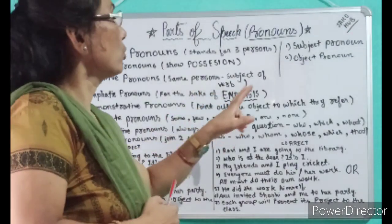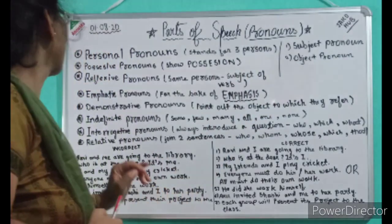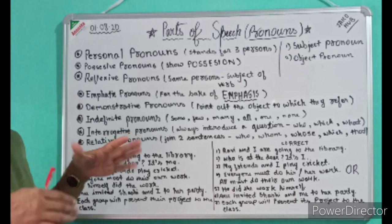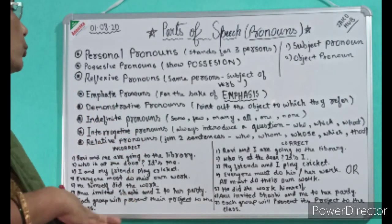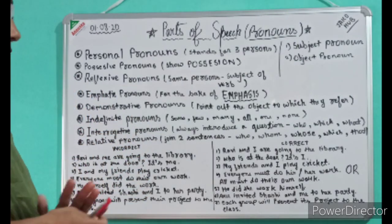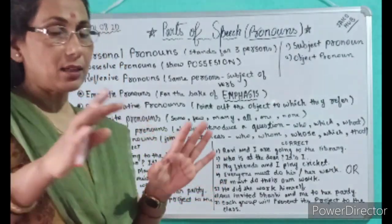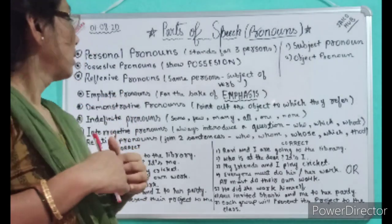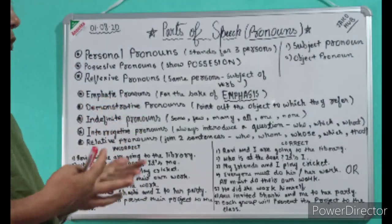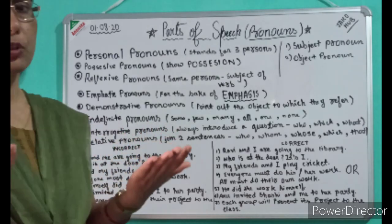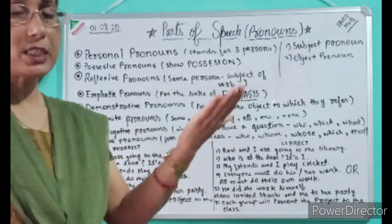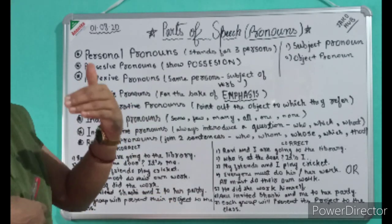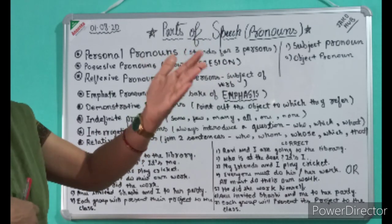Demonstrative pronouns point out the object to which they refer. Indefinite pronouns — as the word describes, indefinite means not sure. Some people, few people, many, all, one, and none. For example, 'Someone has done this, but I am not sure who has done this.' 'Many of you used to say so' — but not sure who. Indefinite pronouns always refer to someone whom I don't know definitely.